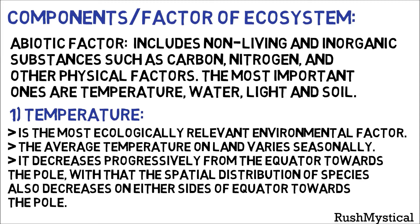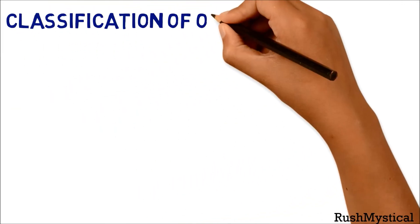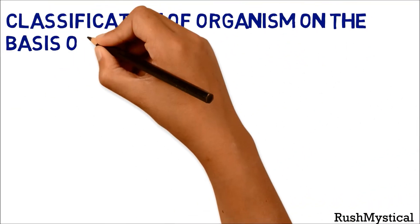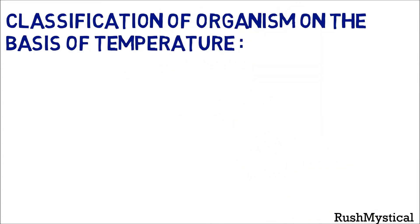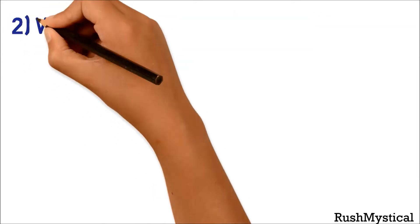Biodiversity in the equatorial region is very high compared to the polar region. We can divide organisms on the basis of temperature into two groups: eurythermal and stenothermal. Eurythermal organisms can tolerate and thrive in wide ranges of temperature — for example, cats, dogs, and tigers. Stenothermal organisms can tolerate only a narrow range of temperature — for example, penguins, pythons, and crocodiles.